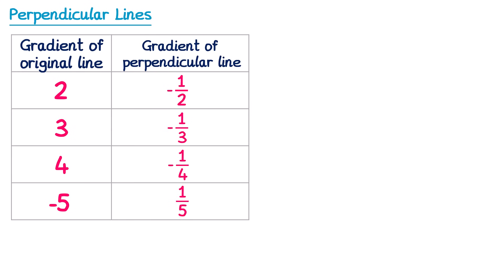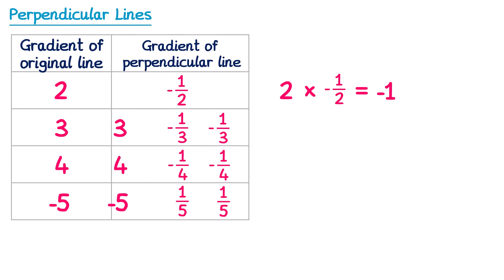You may have noticed that if we ignore the negative sign, the two gradients are linked because they're reciprocals of each other. The reciprocal of 2 is 1 over 2, the reciprocal of 3 is 1 over 3, and so on. When we have reciprocals, the two numbers multiply together to give 1. But since one of them is always negative, the gradients of perpendicular lines will multiply to give negative 1. For example, 2 times negative one half equals negative 1 — because 2 times a half is 1 whole, but positive times negative gives negative 1.